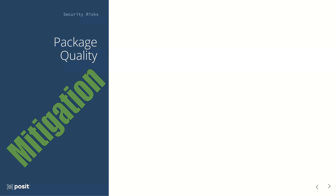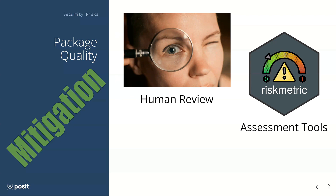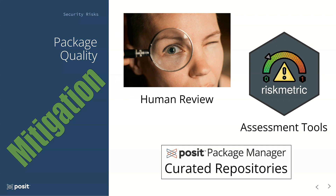So how do we mitigate package quality concerns? The obvious option is for someone to carefully scrutinize the package and make a determination, but as we pointed out, that's not always easy. Fortunately, the community has developed some tools to help — for example, the R Validation Hub has produced an R package called Risk Metric that takes these and many more quality metrics into account to help you get an objective assessment of package quality. And once you've done your assessments and decided which packages to allow your data scientists to use, you can leverage a feature in Posit Package Manager called Curated Repositories, allowing you to create a separate repository containing only the CRAN or PyPI packages you've approved for use in your team or organization.